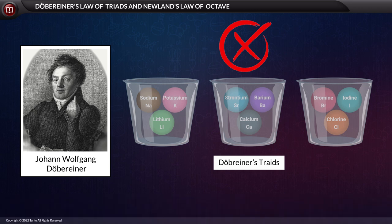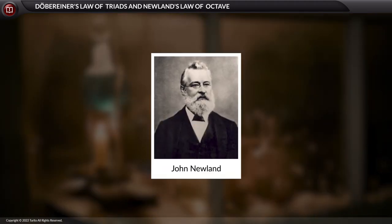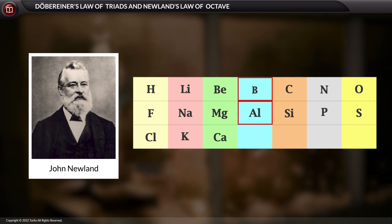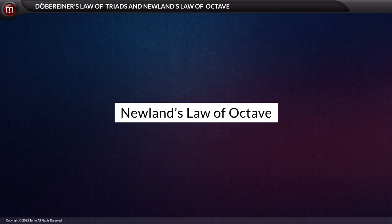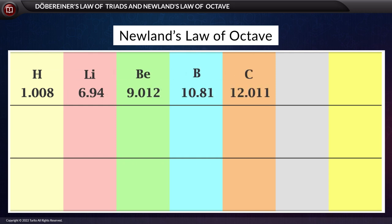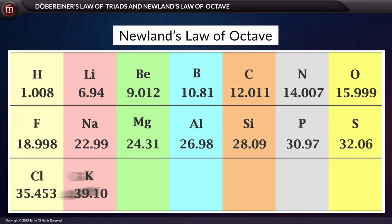In 1865, an English chemist John Newlands proposed a law. He arranged the elements in increasing order of their atomic weights and observed that there is a repetition in the properties of every eighth element with the first. Let us now visualize his octave of elements — from left to right: hydrogen, lithium, beryllium, boron, carbon, nitrogen, oxygen, fluorine, sodium, magnesium, aluminum, silicon, phosphorus, sulfur, chlorine, potassium, and calcium.